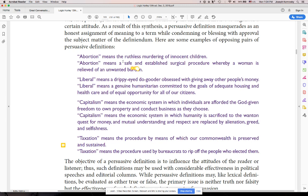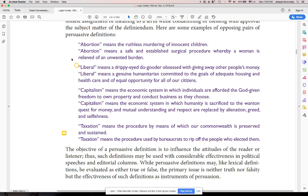This one could be touched up a little bit to where it's more cognitive, just conveys information. This one's more obvious. Liberal means a drippy-eyed do-gooder obsessed with giving away other people's money. I mean, really? Liberal means a genuine humanitarian committed to the goals of adequate housing and health care and equal opportunity for all of our citizens. This is very straightforward, just conveying information about the word liberal. The first one, definitely persuasive.